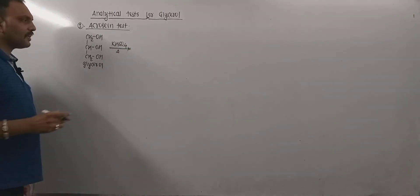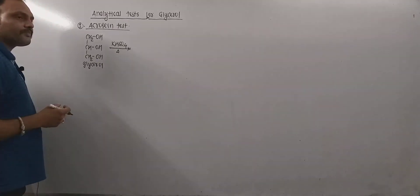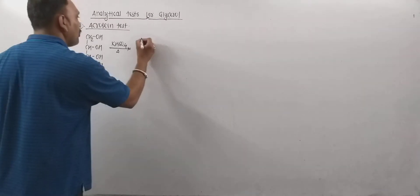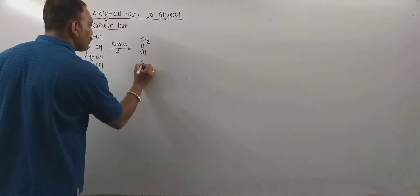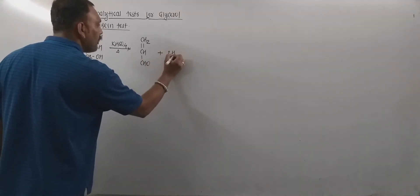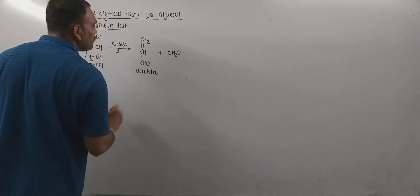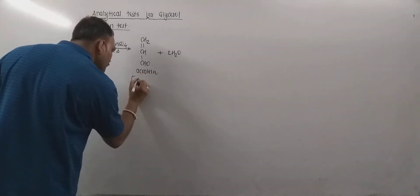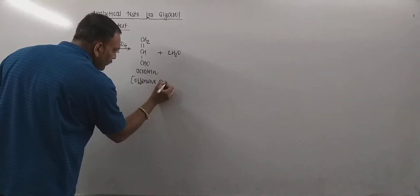Remember, potassium hydrogen sulfate is a dehydrating agent, so it has ability to bring about dehydration of glycerol. And upon dehydration, the product obtained is acrolein with the departure of water.